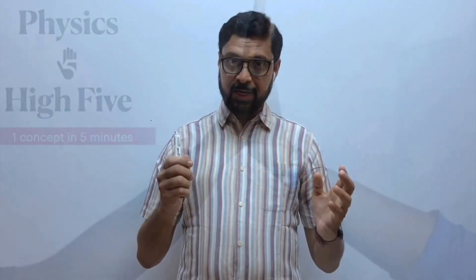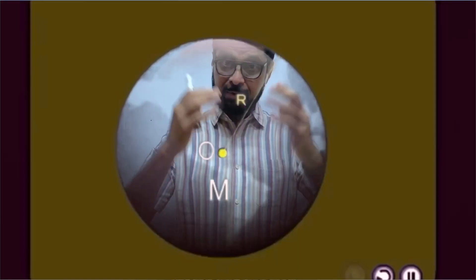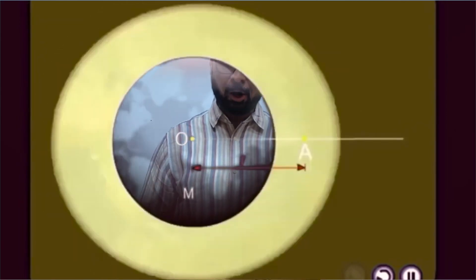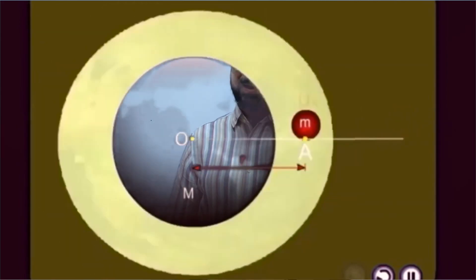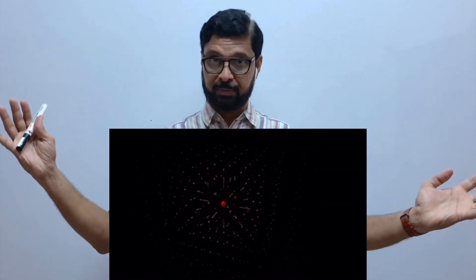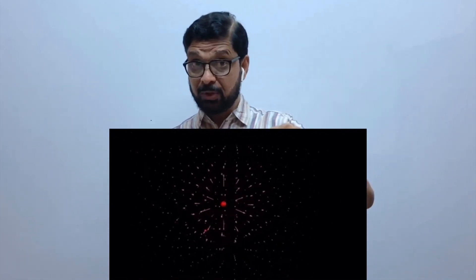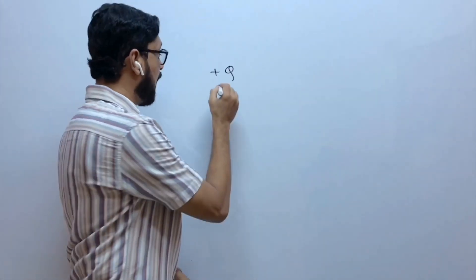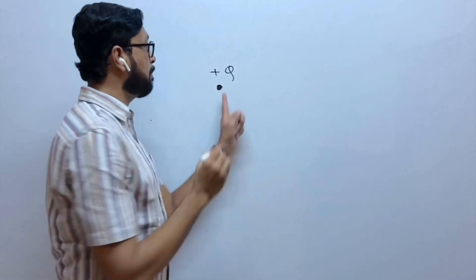There is a gravitational field around Earth. If any object comes inside the gravitational field, a force acts on that object. Similarly, there is an electric field around every charge. And if another charge comes into that electric field, a force will act on that charge. Suppose here is charge plus capital Q.